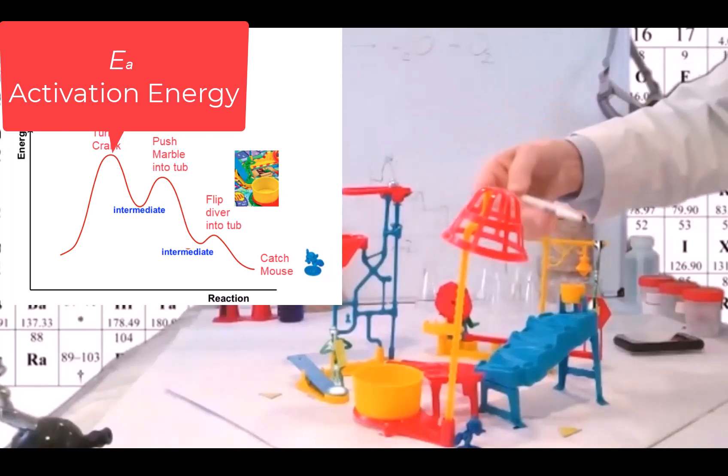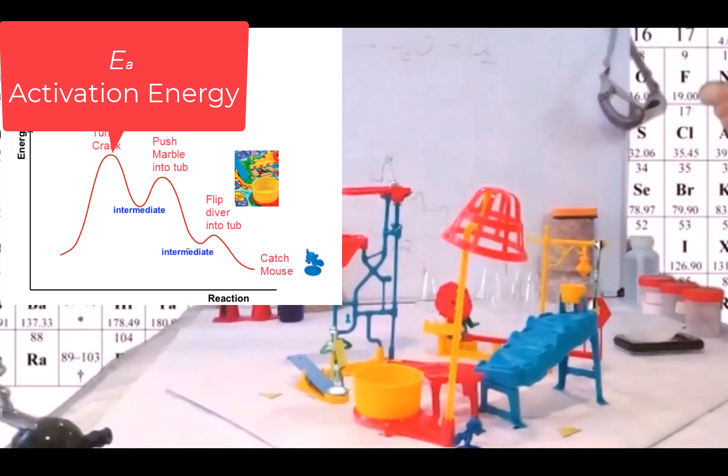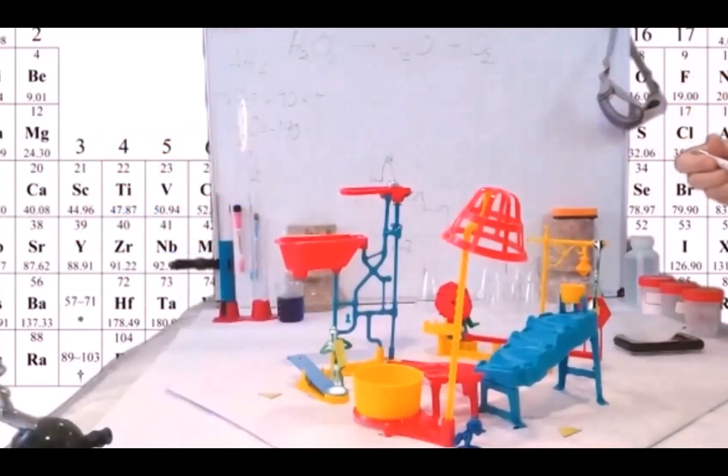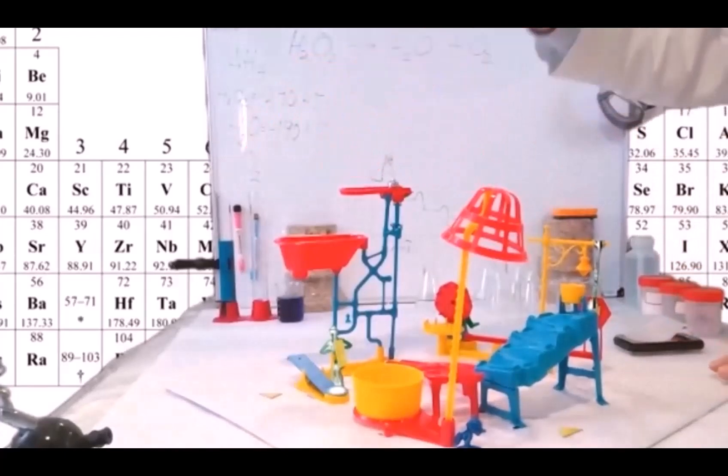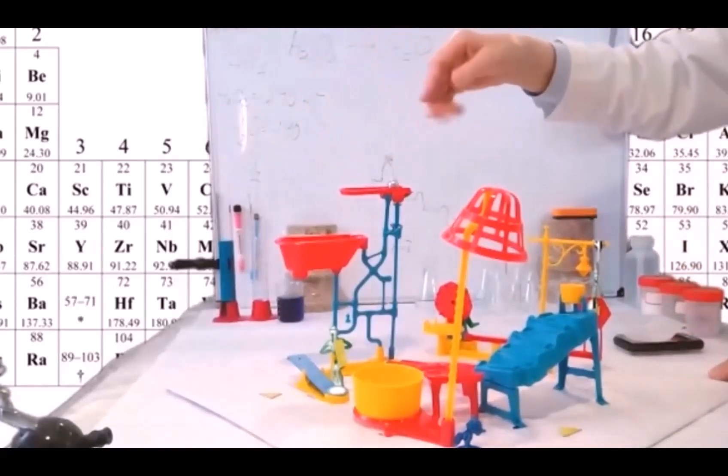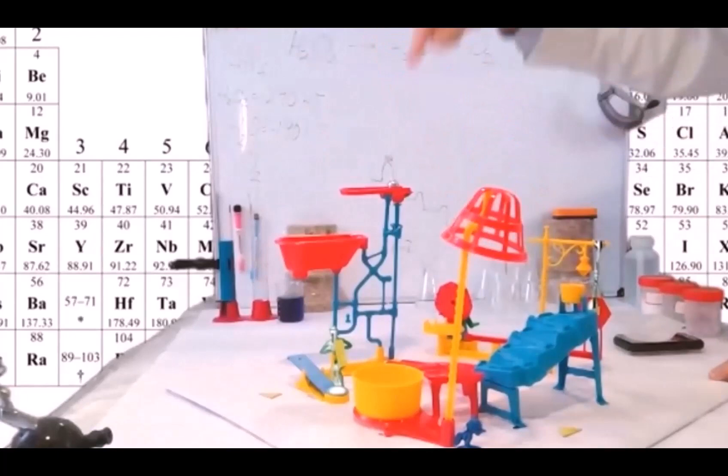Once that barrier is hit, this reaction can go. I mean, this is an exothermic reaction that's waiting to actually catch the mouse. You know, if I put something around here, you wouldn't see these steps. And that's what usually happens in a chemical reaction. You see the beginning and you see the end.